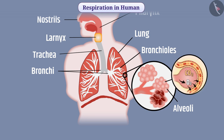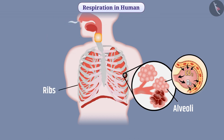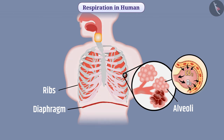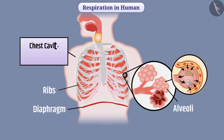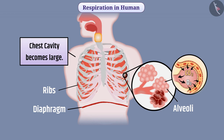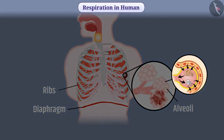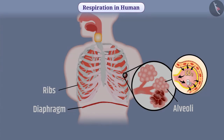We know that lungs are present inside the ribs. While inhaling, the diaphragm becomes flattened, due to which ribs lift up and the chest cavity becomes large. As a result, air flows into the lungs and alveoli fills with air. Oxygen present in the air of alveoli then enters the blood of the alveolar blood vessels.